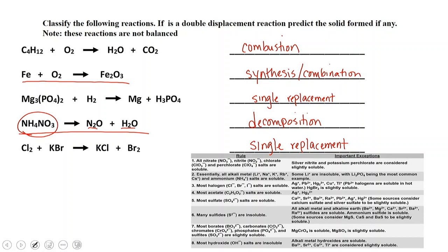For the first problem, a carbon and hydrogen compound plus oxygen gives us water and carbon dioxide — that's a combustion reaction. For number three, we've got one partner swapping out with the other, so we have a single replacement reaction. The same pattern applies at the bottom — another single replacement reaction.